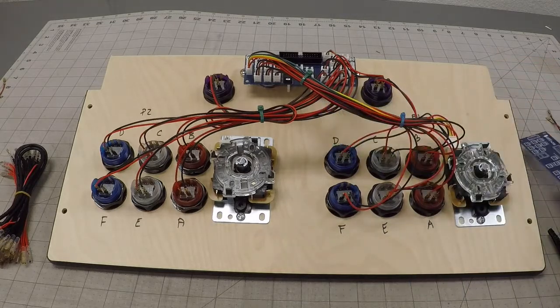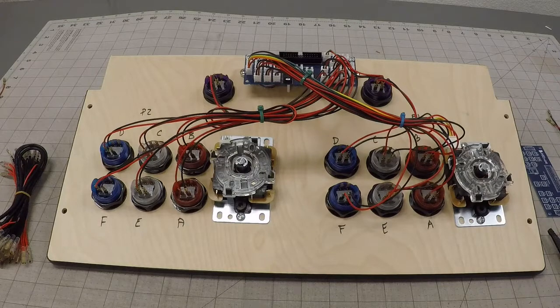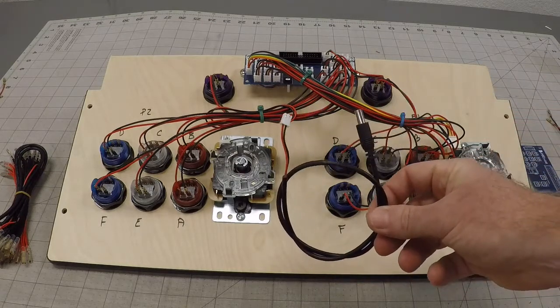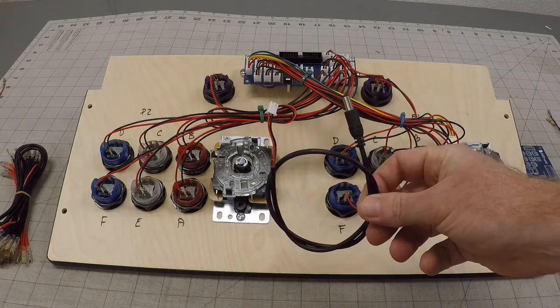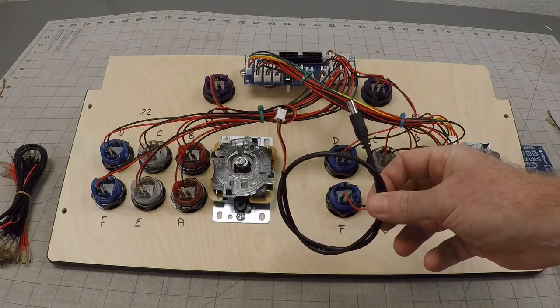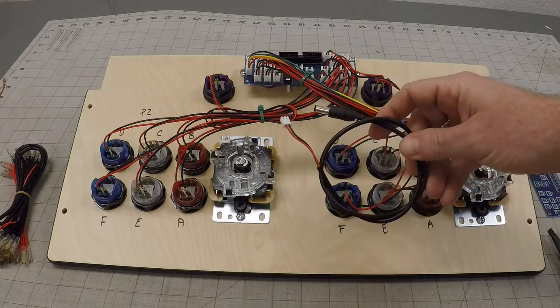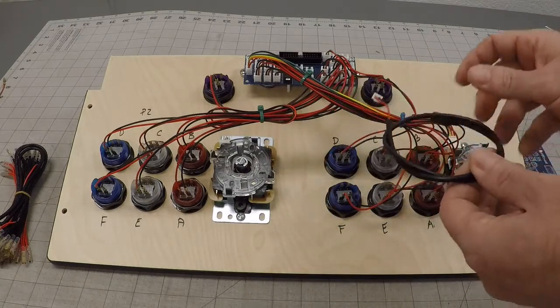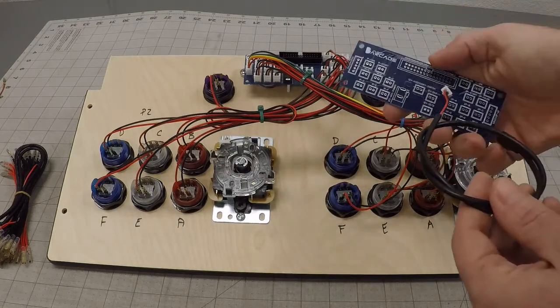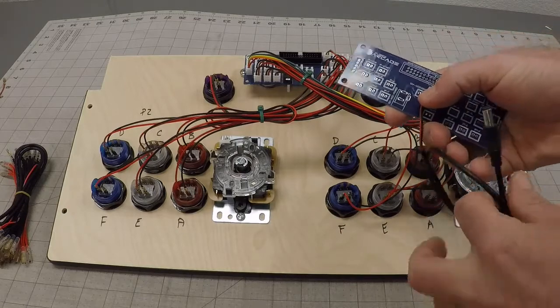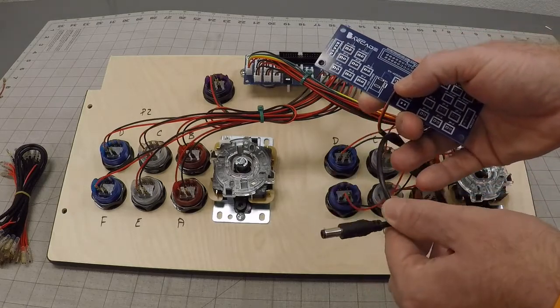You can do this in one of two ways. You can use a cable like this which will require no cutting or anything. This will give you a 5.5 by 2.1 millimeter barrel out. You can easily just simply plug this into the board and then plug this one into your LED harness and it'll work.